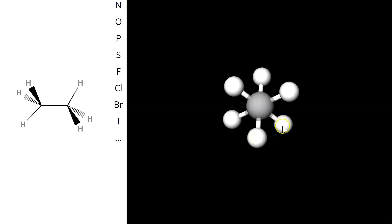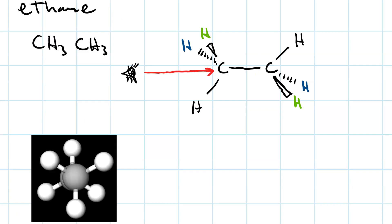This is the one that was on the wedge on the right hand structure. This is the one on the dash on the right hand side. And this is the one going straight up. So this is what we see in mole view, and the Newman projection is just going to be recreating that with a drawing. The carbon that's closer to our eye is the front.